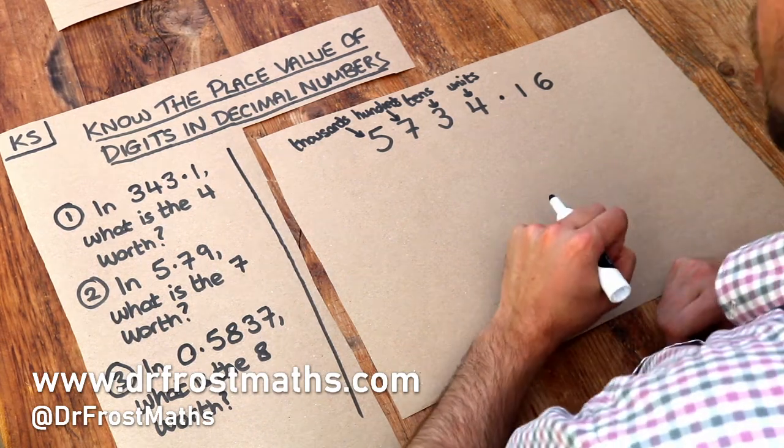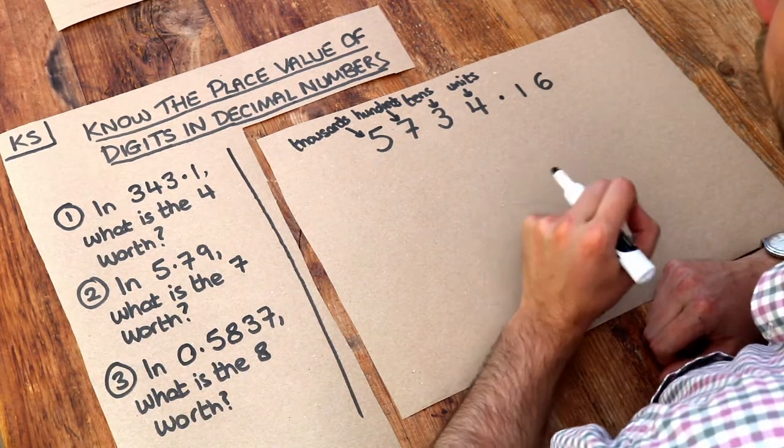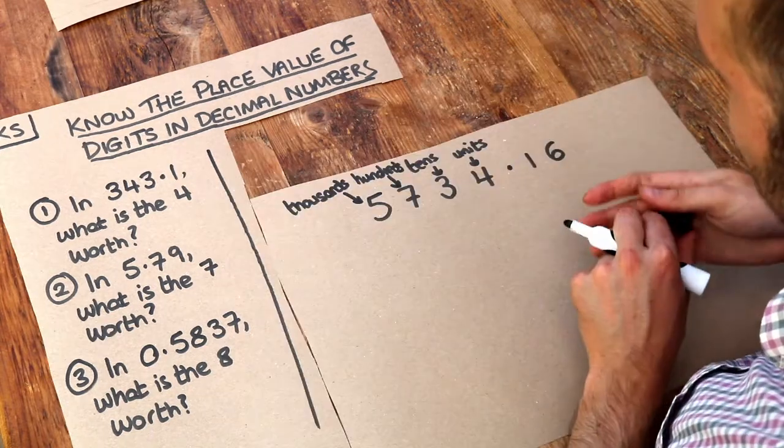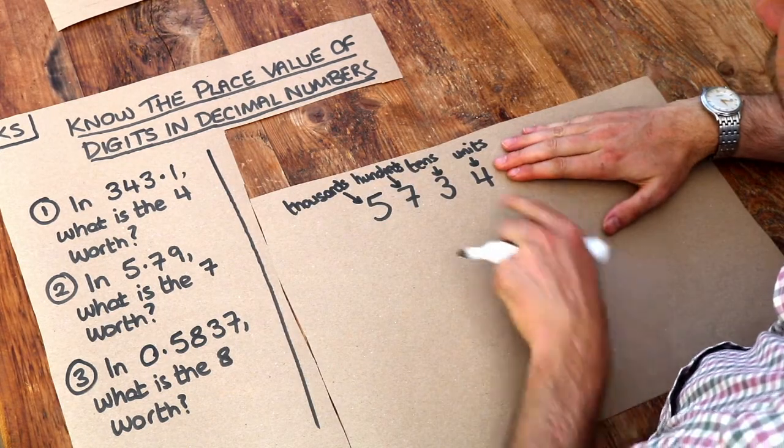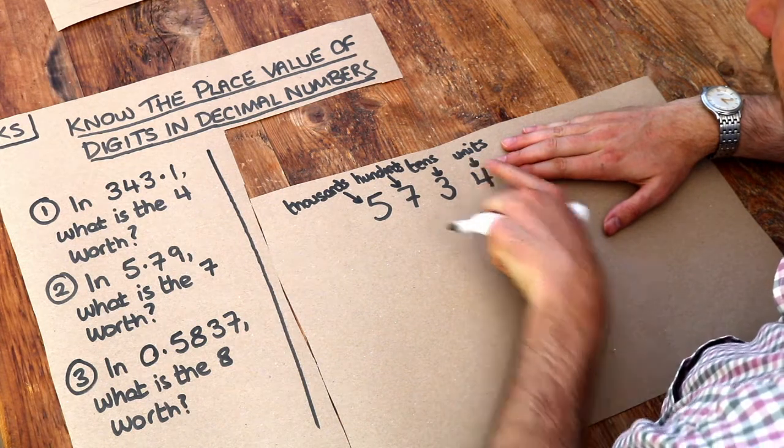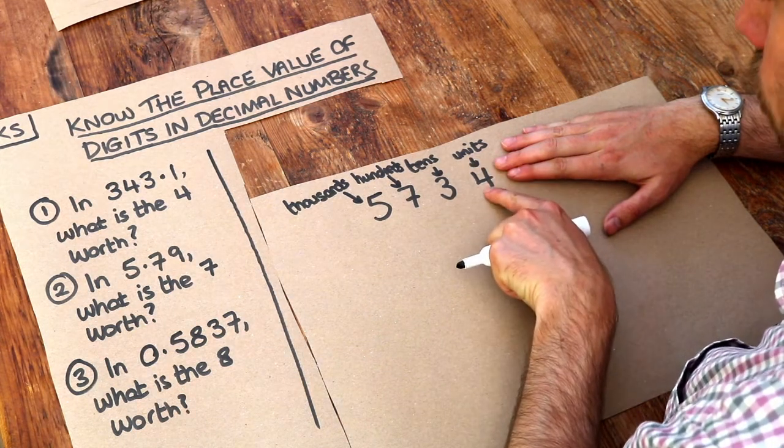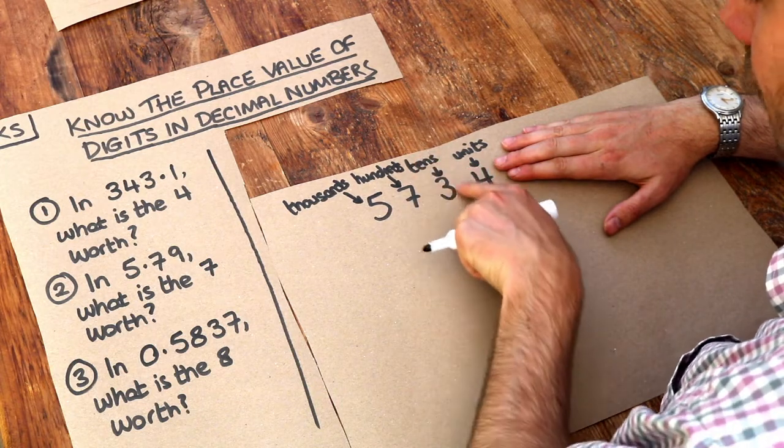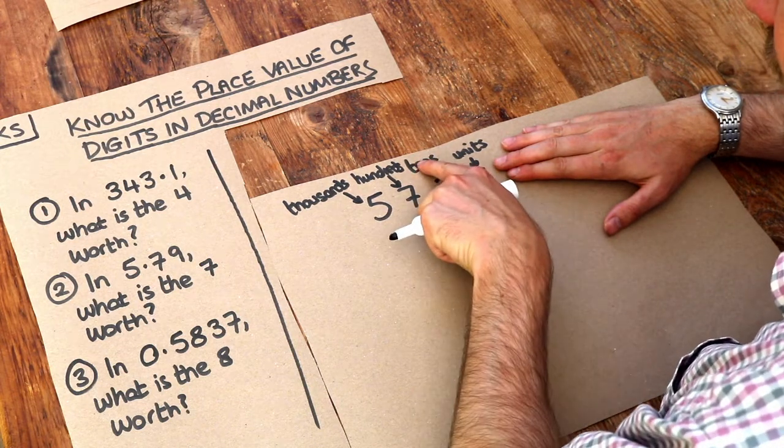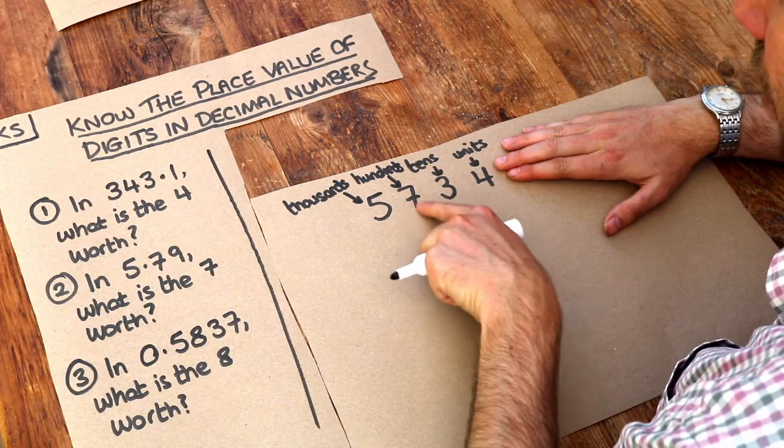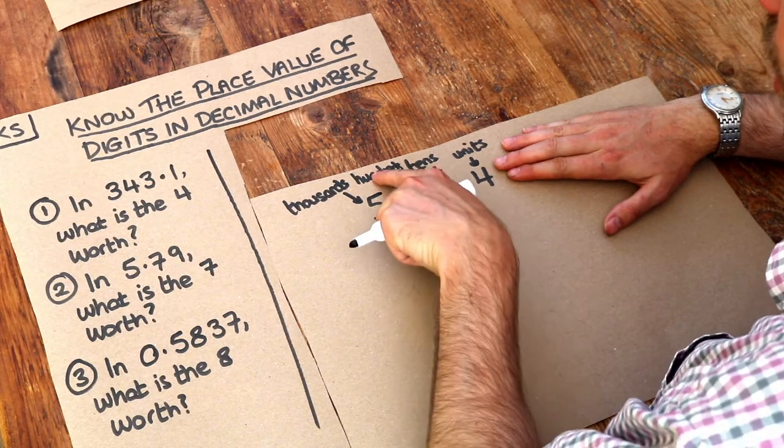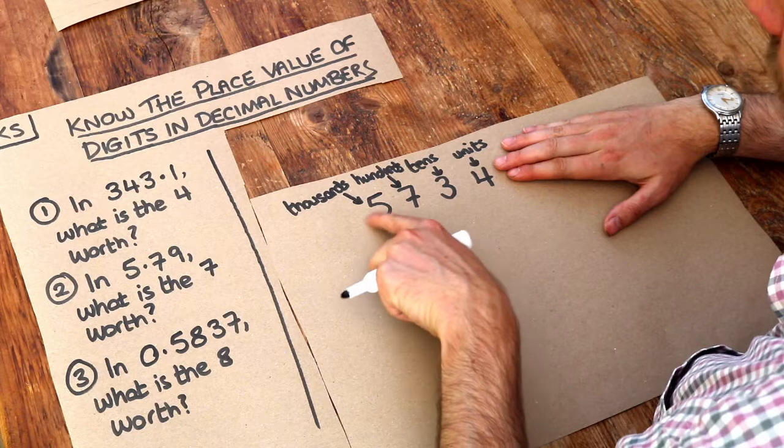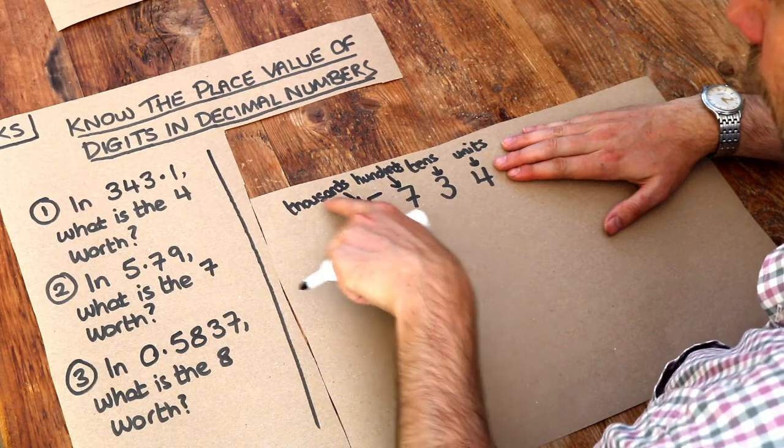In the previous video we looked at the place value of whole numbers. When we don't have this dot on the end, the rightmost digit is the units digit, worth four units. The next digit is the tens digit, worth three tens. The next digit is the hundreds digit, worth seven hundreds. And this is the thousands digit, worth five thousands.